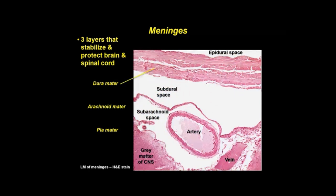Histologically, dura is a dense fibrous connective tissue of collagen and elastic fibers. Arachnoid is several layers of fibroblasts and collagen, and pia is a thin layer of flattened cells. Cerebrospinal fluid circulates in the subarachnoid space.